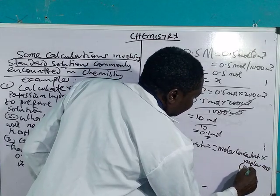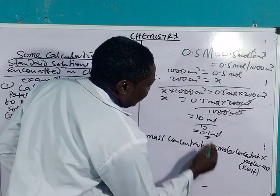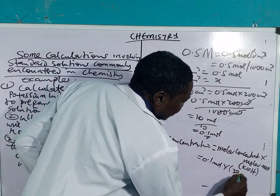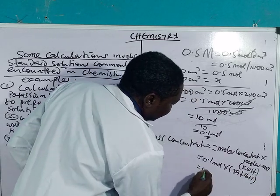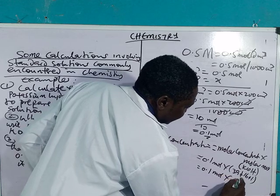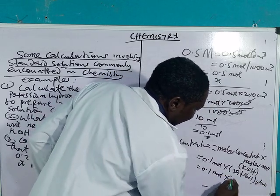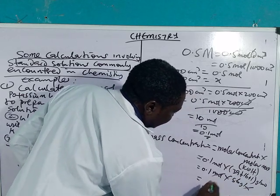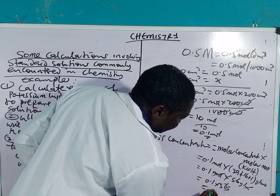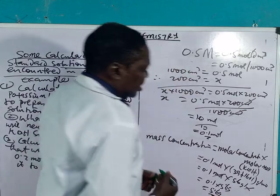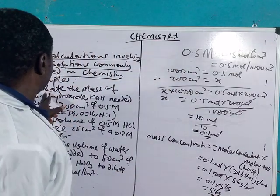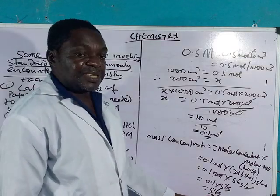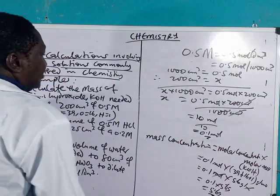We know that the molar mass of KOH—potassium is 39, plus 16, plus 1—is 56 grams per mole. This molar concentration we've already got is 0.1 mole. So, 0.1 mole times 56 grams per mole gives you 5.6 grams. This is the mass of potassium hydroxide you require to prepare 200 cm³ of 0.5 molar solution.